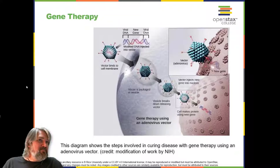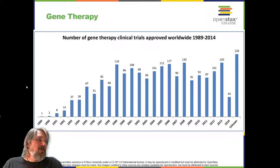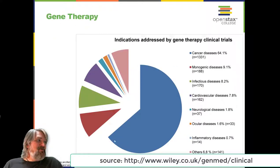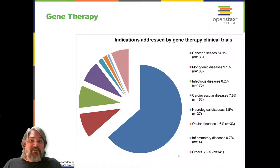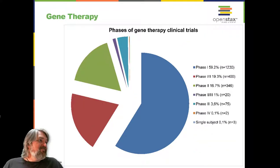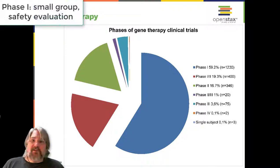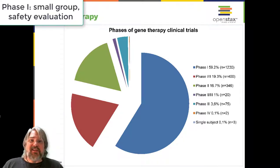Here's an additional look beyond the textbook. Up through 2014, here's an idea of how many gene therapy clinical trials have been approved. Mostly these therapies are for cancer, but there are a number of other diseases with research attempts currently underway. A phase one clinical trial is a very small study targeting the safety of the therapy, and the majority of trials are currently in phase one.